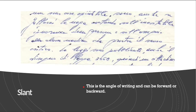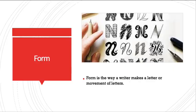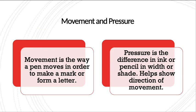Slant means basically the angle of writing — whether it was leaning forward or backward. The next feature is form: form is the way a writer makes a letter, whether writing in capital letters or how a particular letter like N, T, or I is formed, and it falls under the category of individual characteristics. Movement and pressure of the pen are also important — applying more pressure on the document will produce indented impressions, and how the pen is moved also helps in determining how a particular letter was formed.